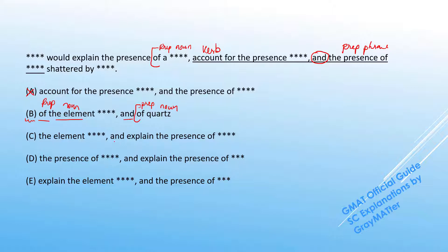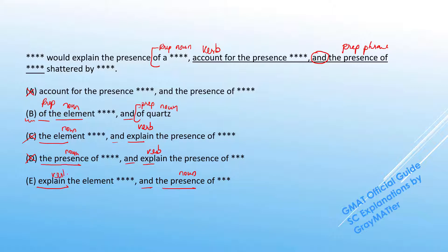In C, after the 'and,' we have a verb, but the second entity after the comma is a noun — that breaks parallelism, so C goes off. In D, after the conjunction we again have a verb, but the second entity starts with the noun 'the presence' — parallelism broken. And in E, we have 'the presence,' which is a noun, but the second entity is 'explained,' which is a verb — also a breach of parallelism. So the correct answer is B.